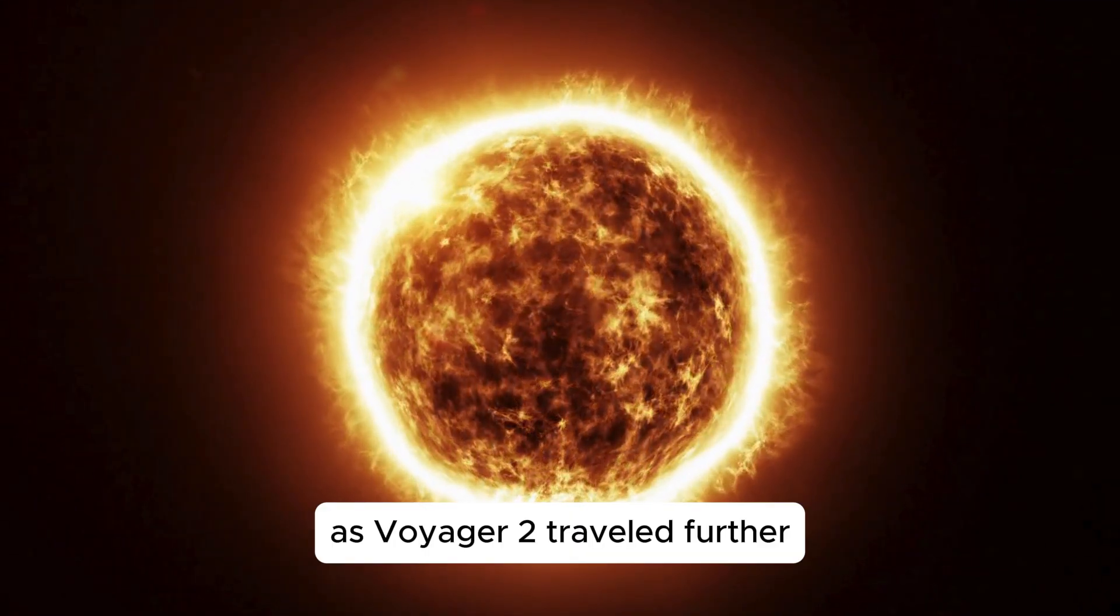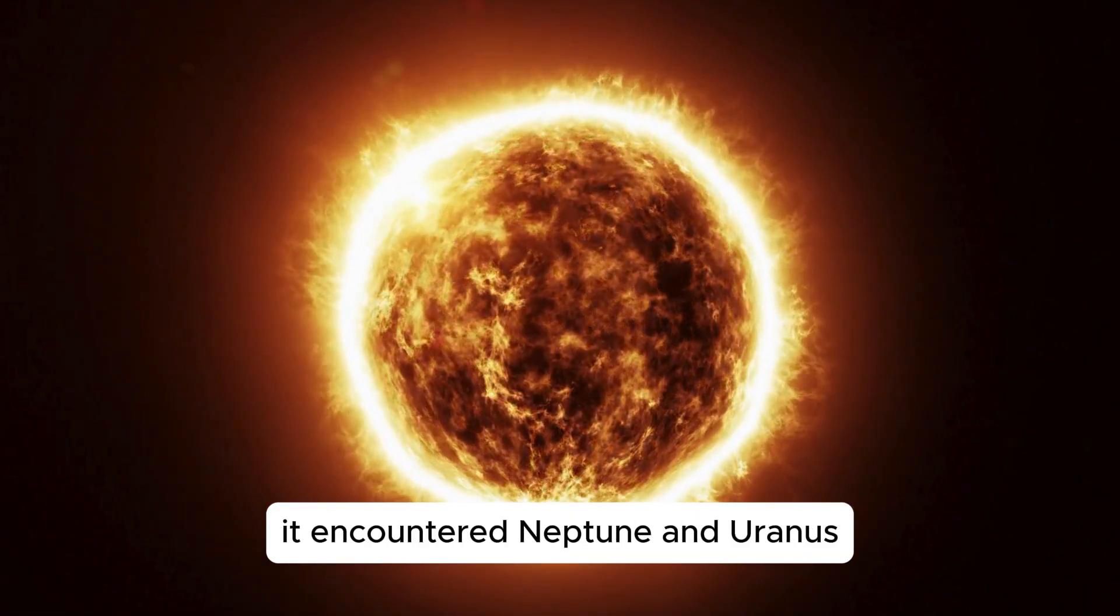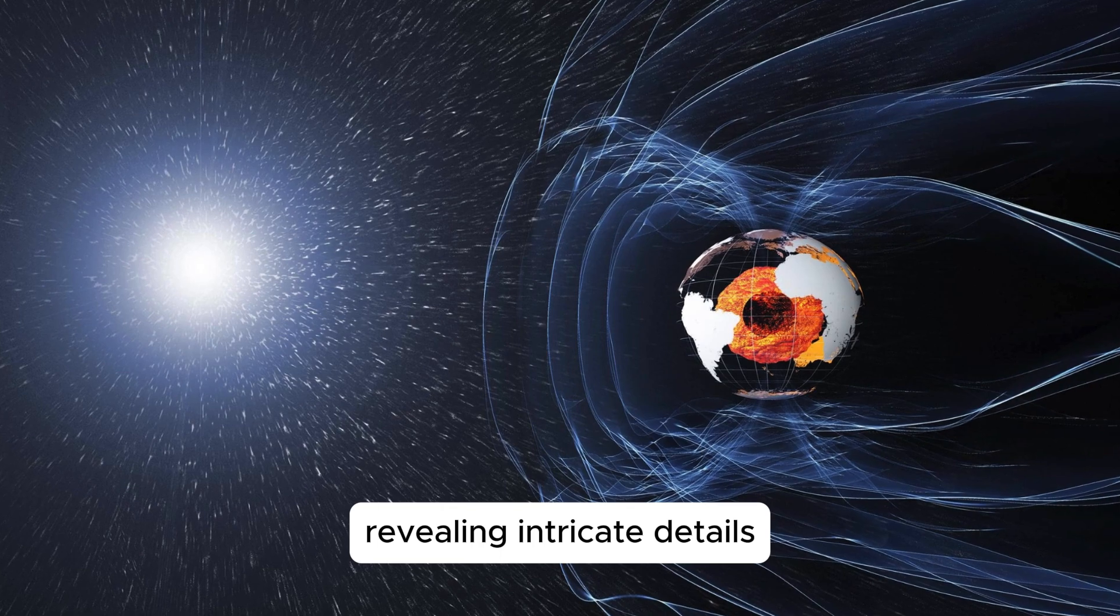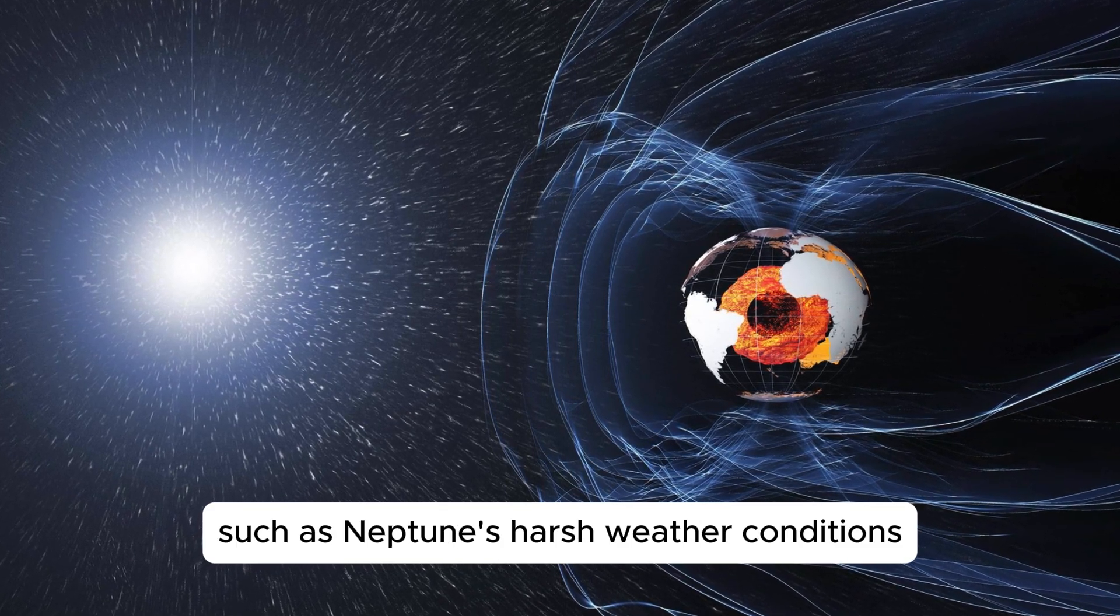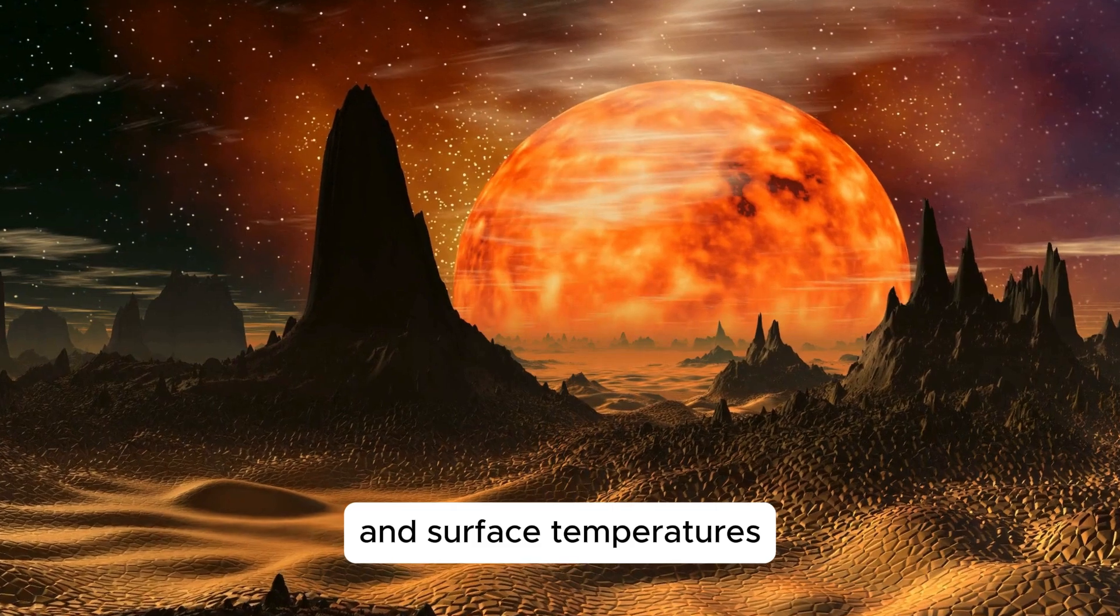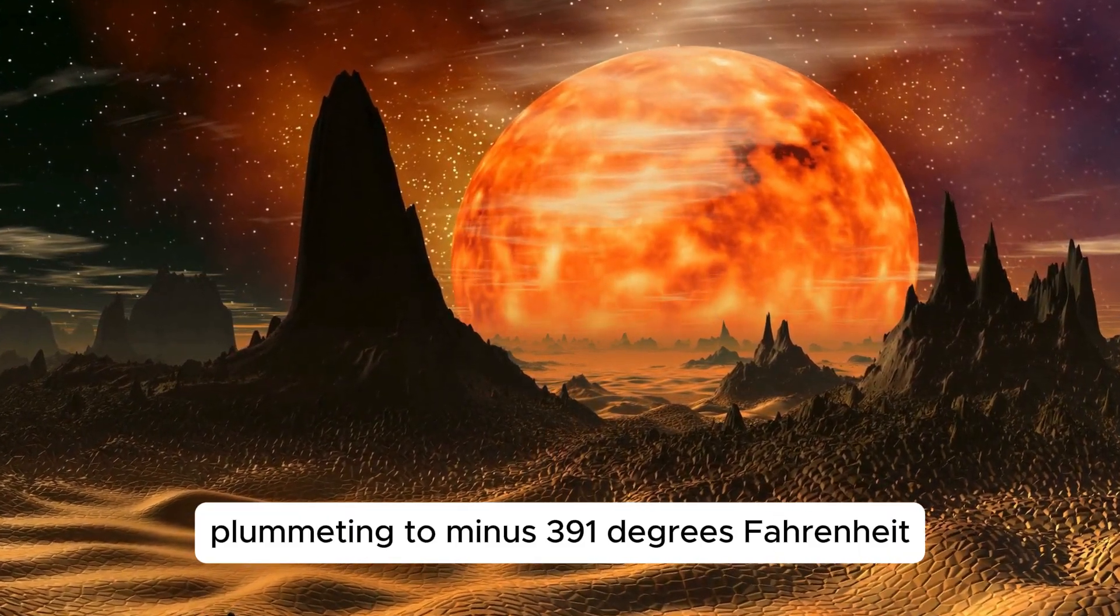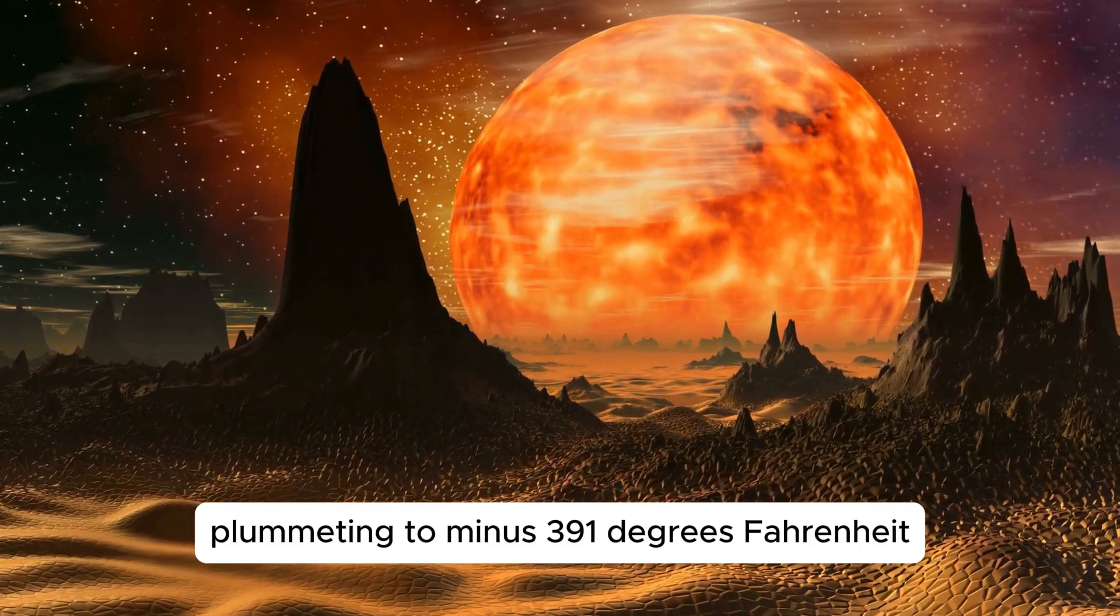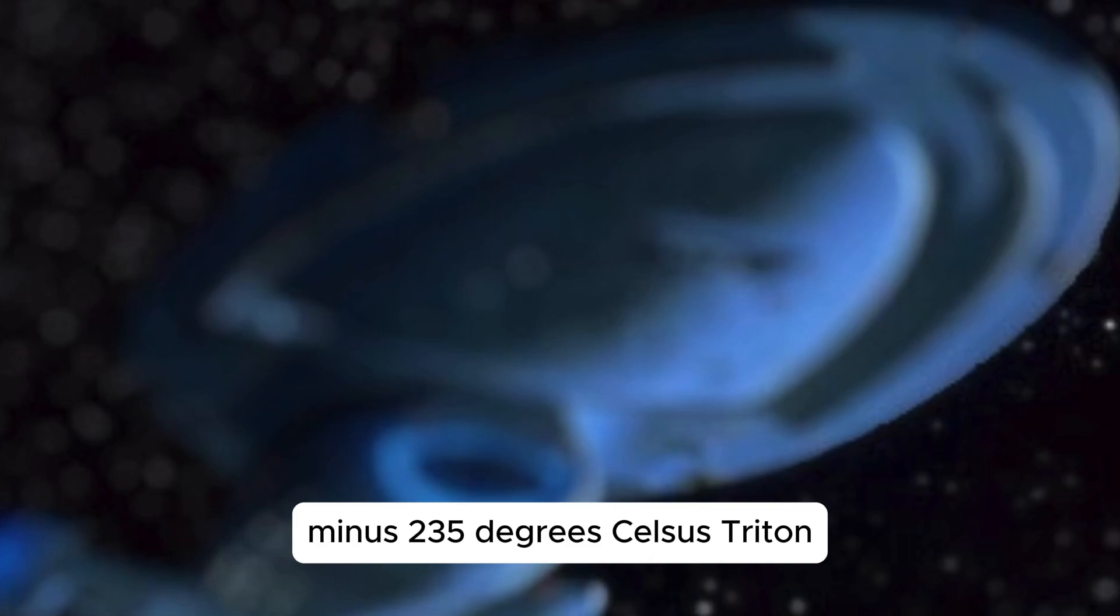As Voyager 2 traveled further, it encountered Neptune and Uranus, revealing intricate details such as Neptune's harsh weather conditions, with winds reaching up to 1,000 miles per hour and surface temperatures plummeting to minus 391 degrees Fahrenheit, minus 235 degrees Celsius.